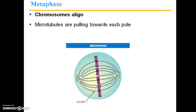During metaphase, the chromosomes align in the middle of the cell, and the microtubules are pulling those chromosomes towards each pole. They're actually just shortening in length, so they end up carrying these sister chromatids with them.